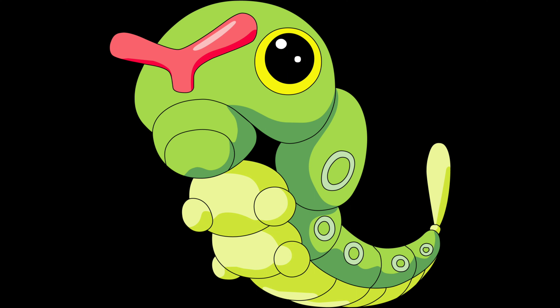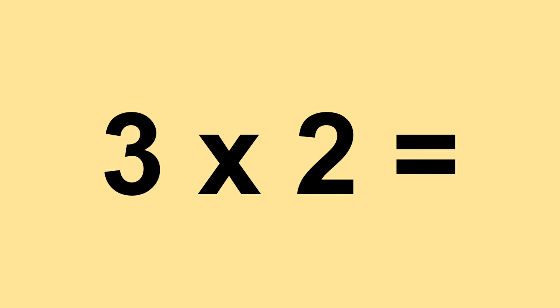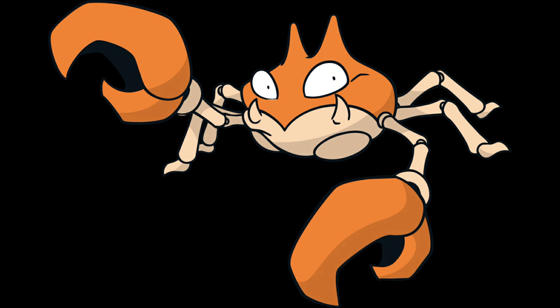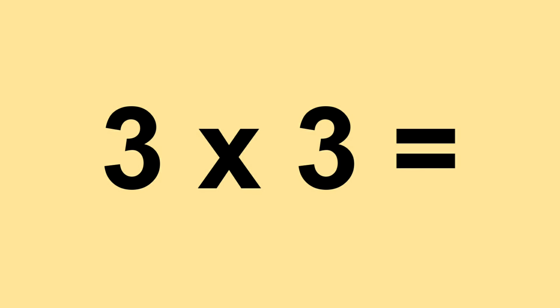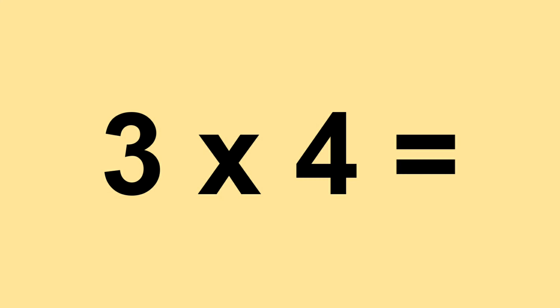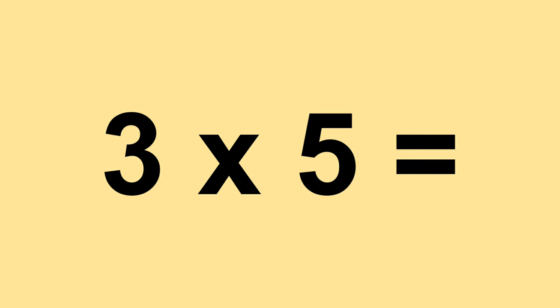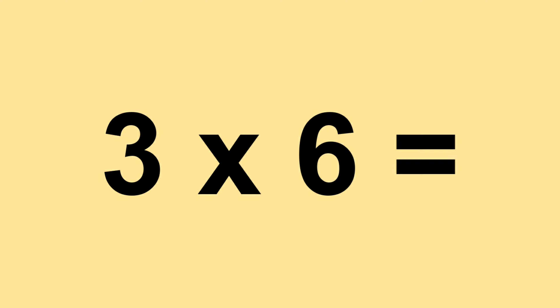Three times zero equals zero. Three times one equals three. Three times two equals six. Three times three equals nine. Three times four equals twelve. Three times five equals fifteen. Three times six equals eighteen.